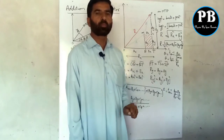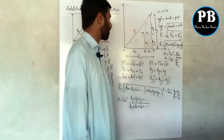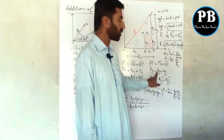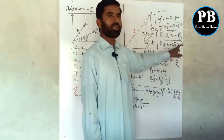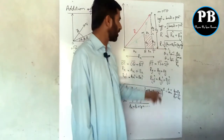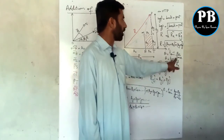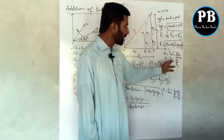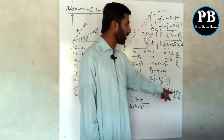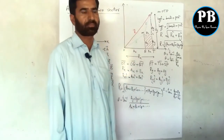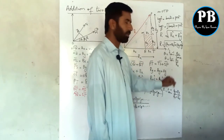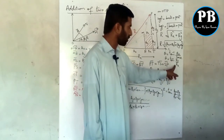Substituting the values of Rx and Ry which we calculated — Rx equals Ax plus Bx, and Ry equals Ay plus By — we get the magnitude. For direction, theta equals tan inverse of perpendicular over base, where perpendicular is Ry and base is Rx. Substituting Ry and Rx values gives theta equals tan inverse of (Ay + By) over (Ax + Bx). This gives the magnitude and direction when there are two vectors.